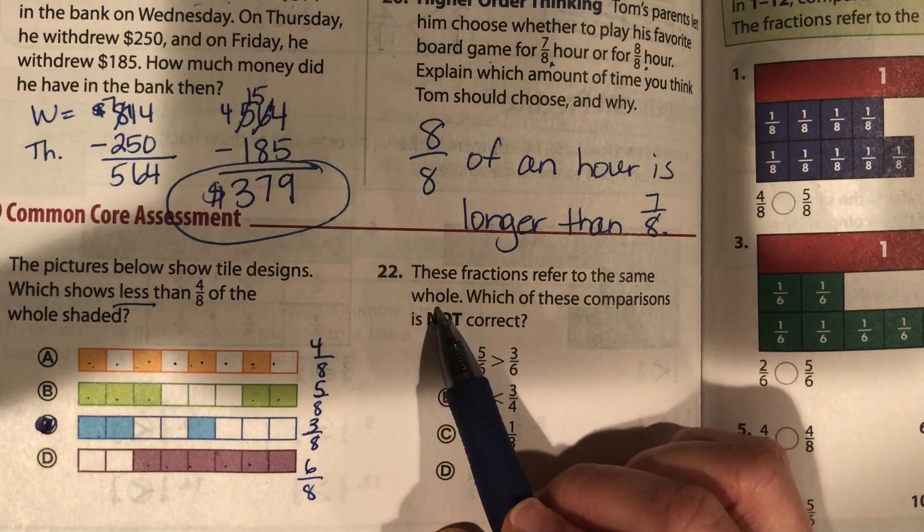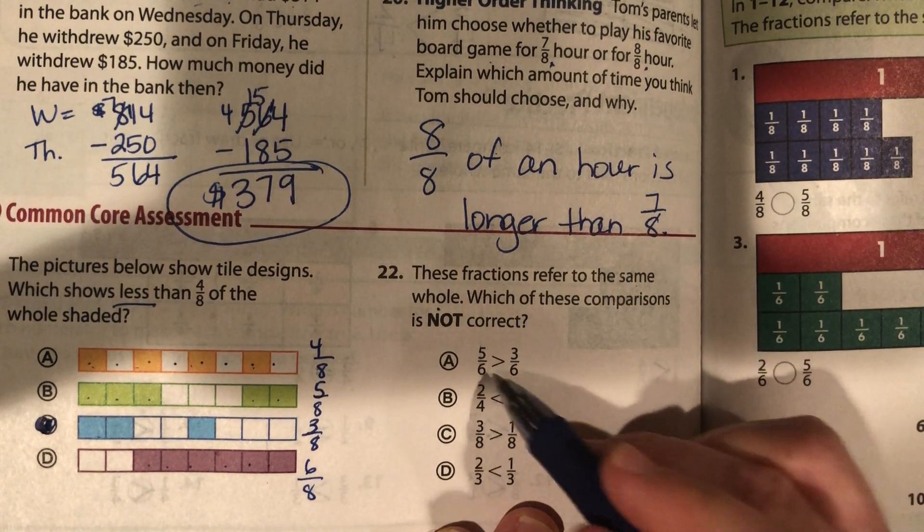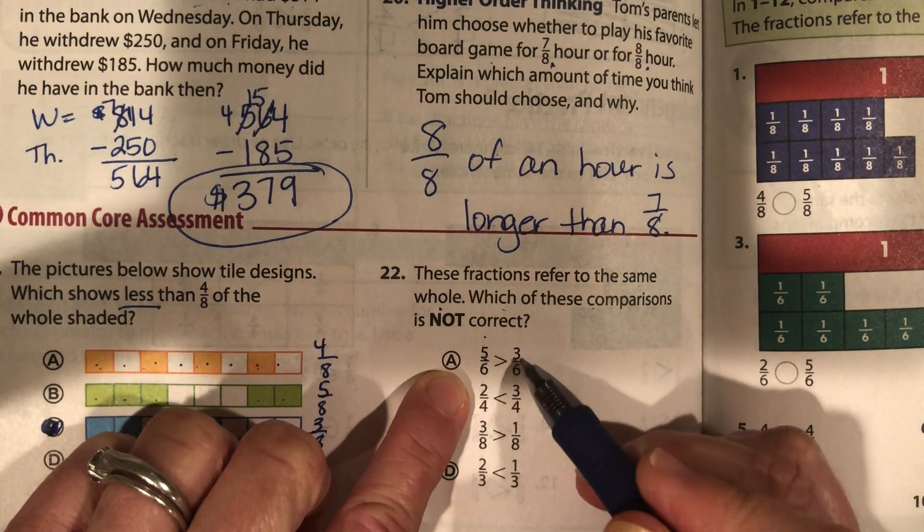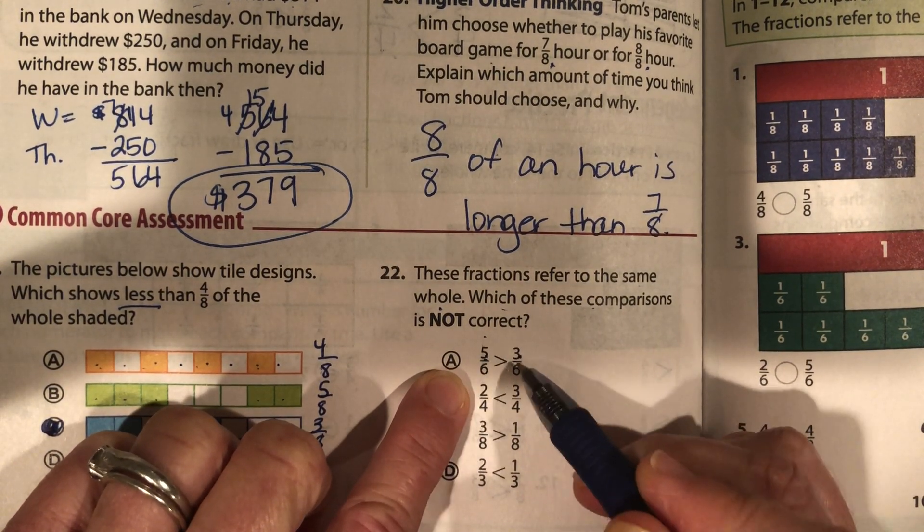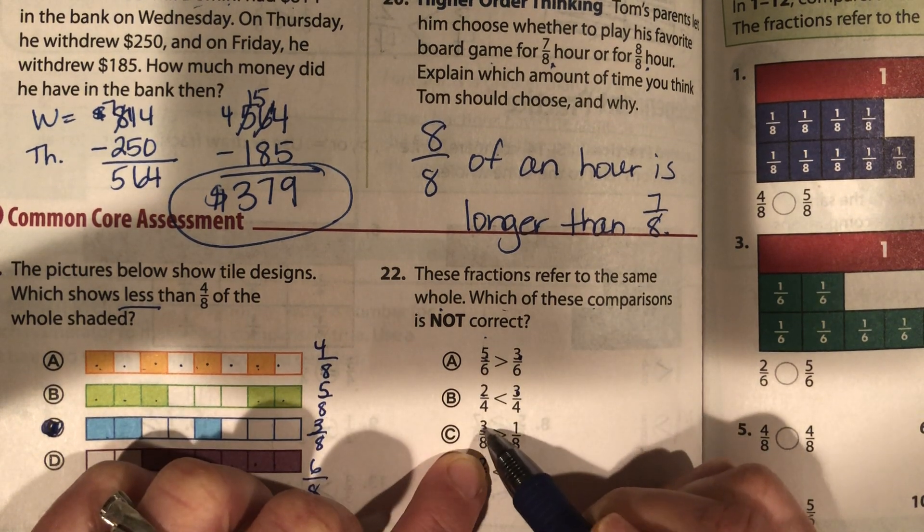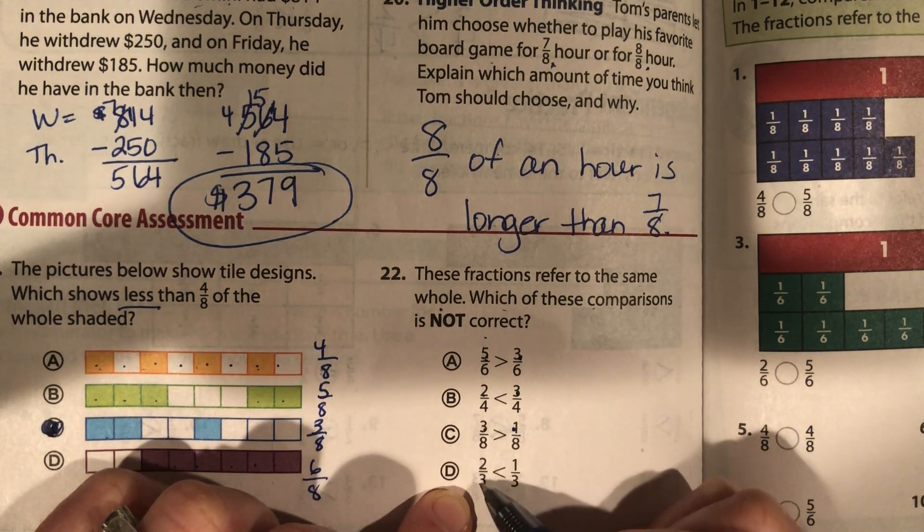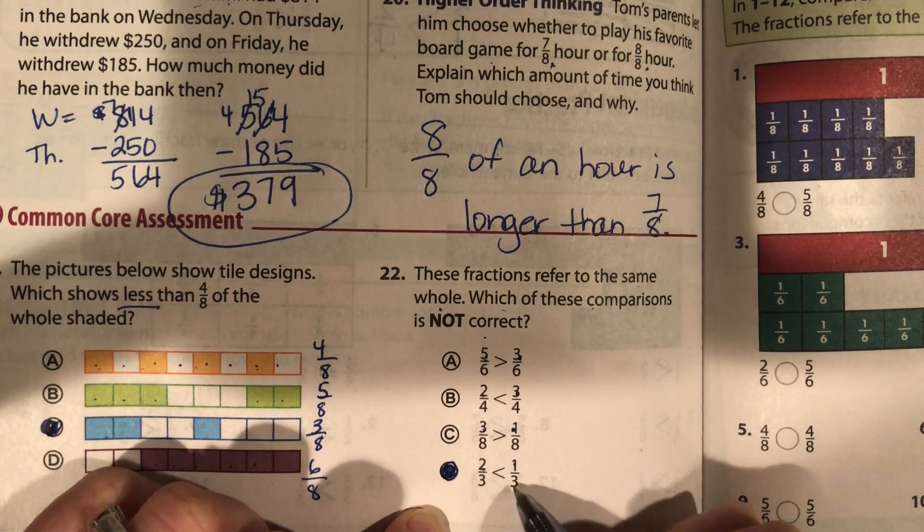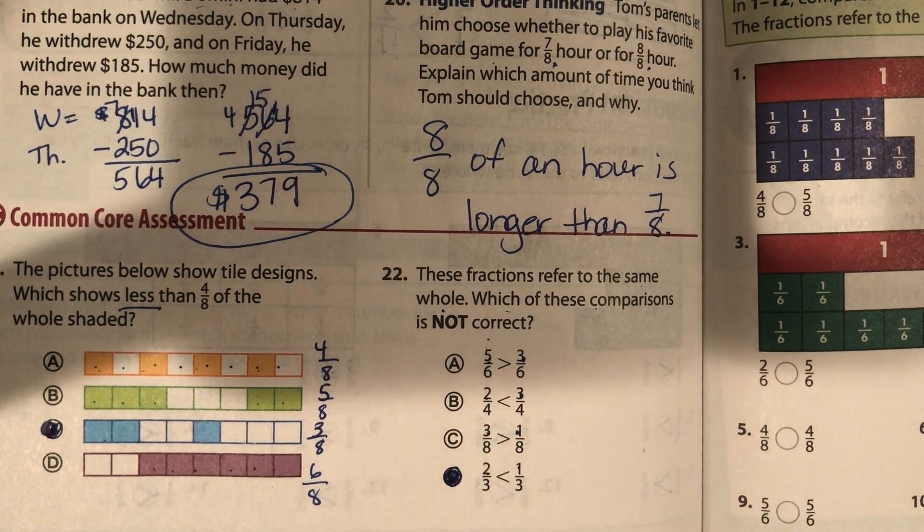These fractions refer to the same whole. That means their pizza sizes are exactly the same. Which of them is not correct? Five-sixths would be greater than three-sixths because five is greater than three. Two-thirds is less than three-thirds. Three-thirds is greater than one-third. And two-thirds is not less than one-third. So two-thirds is not smaller than one-third. Great job.